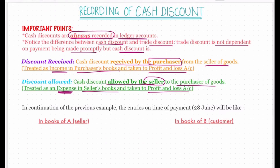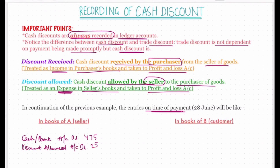In continuation of the previous example, the entries recorded at the time of payment on 20th June in the books of A — the seller — will be: Cash or Bank Account debit $475; Discount Allowed Account debit $25, because it is an expense for A; to Debtors Account (B) credit $500, because money is being received from B and as per the personal rule — credit the giver.